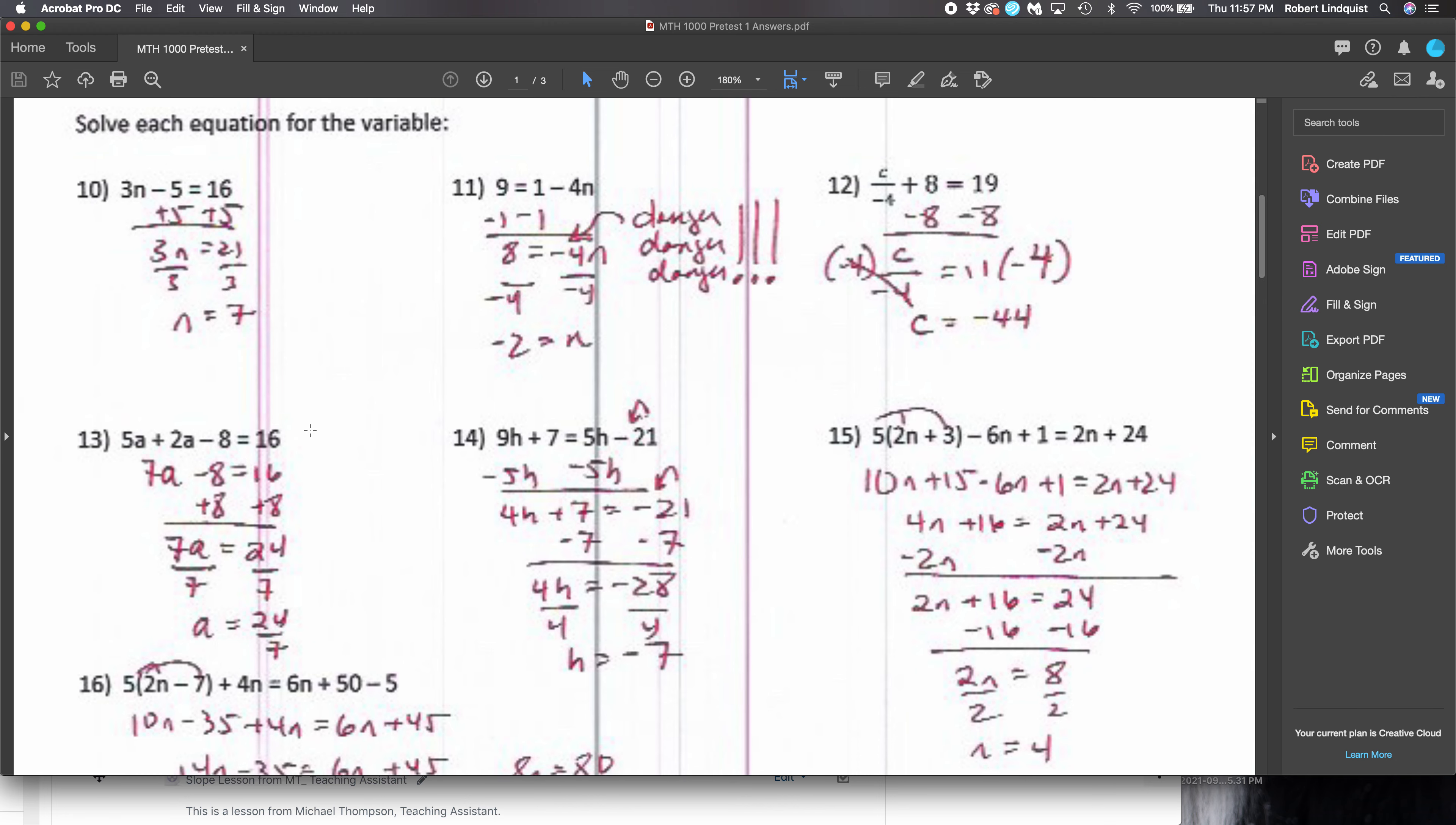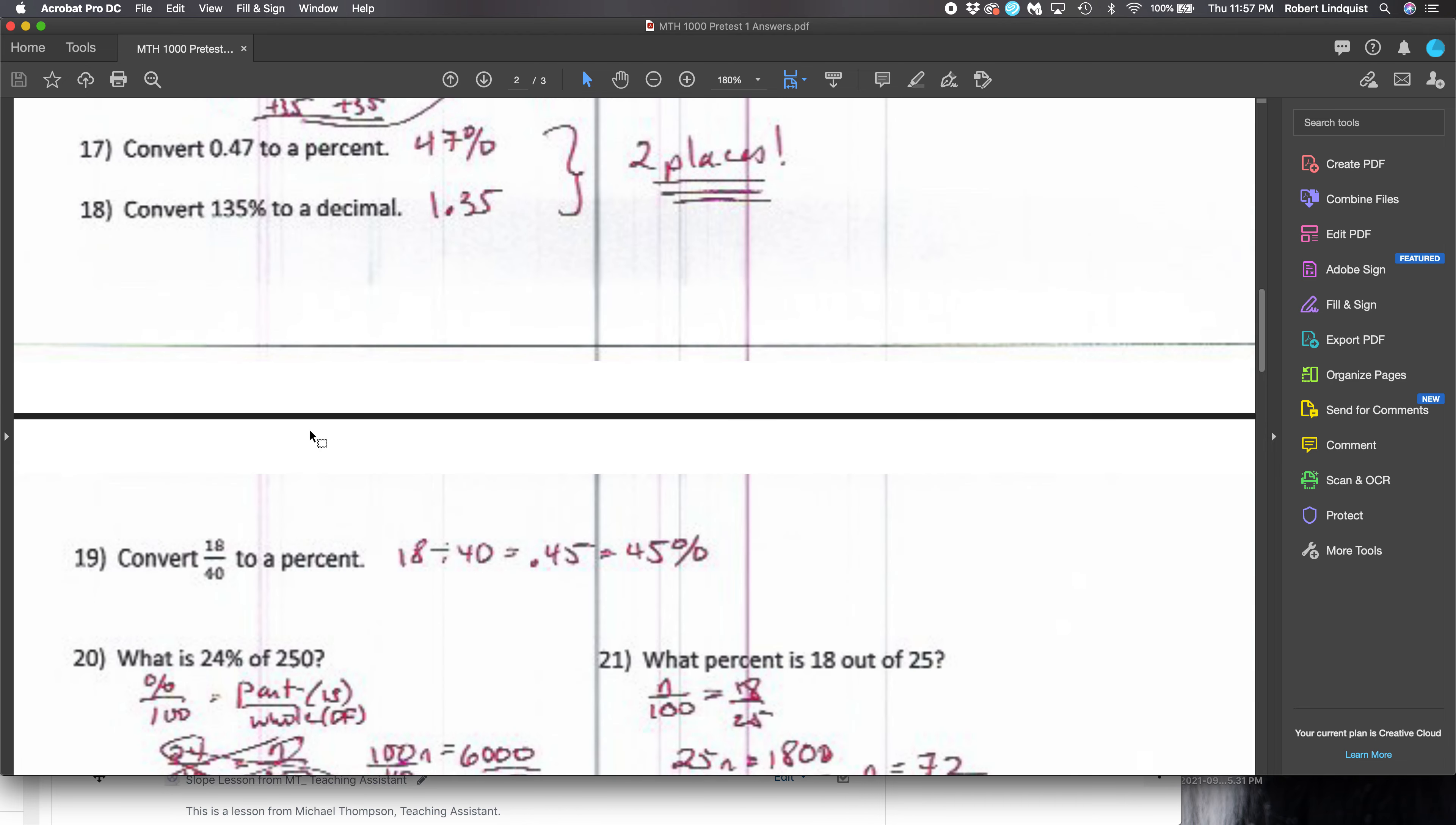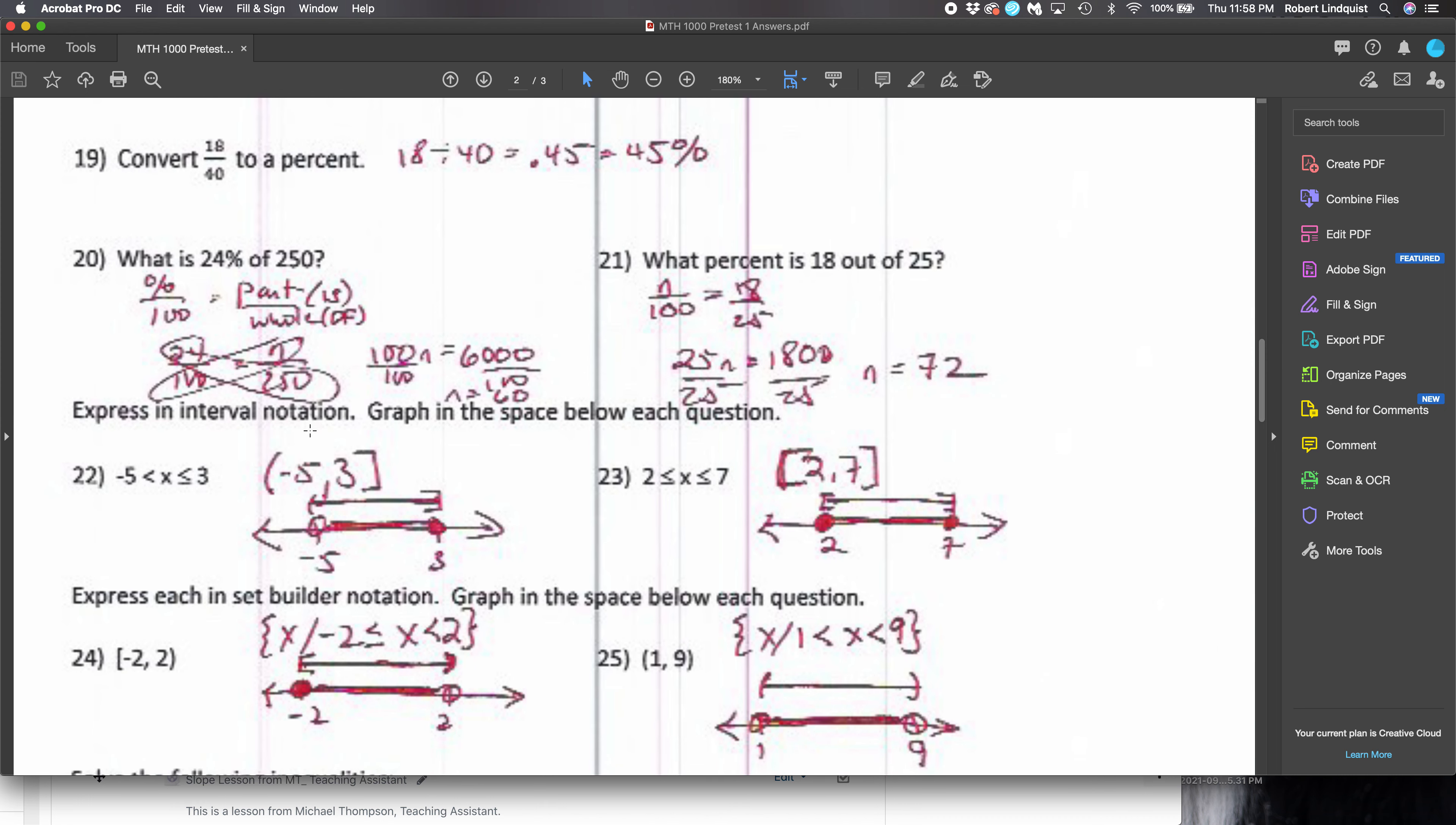All right, here's numbers 10 through 15. Again, you stop and start to your advantage. Here, this is the video. Okay, number 16 through 18. Numbers 19 through 25.